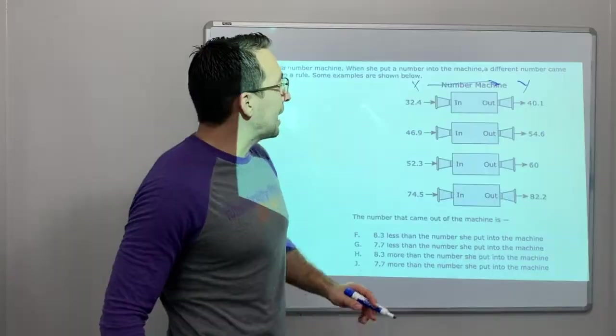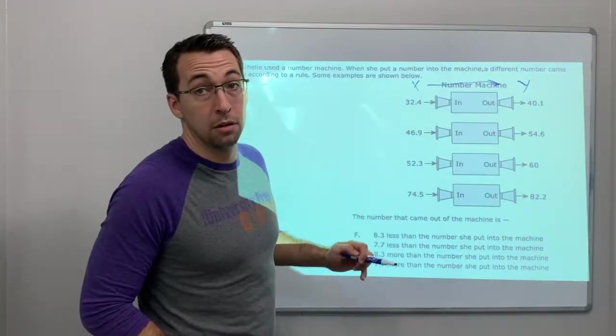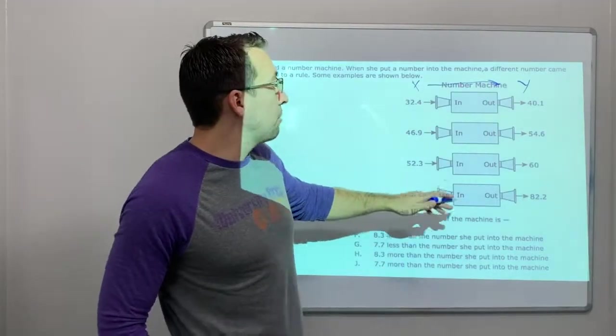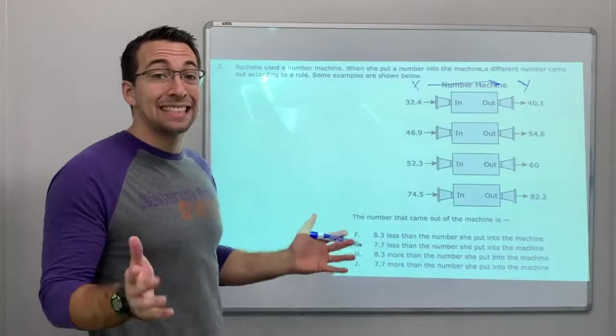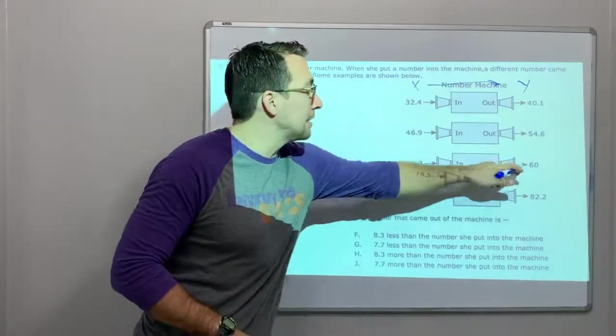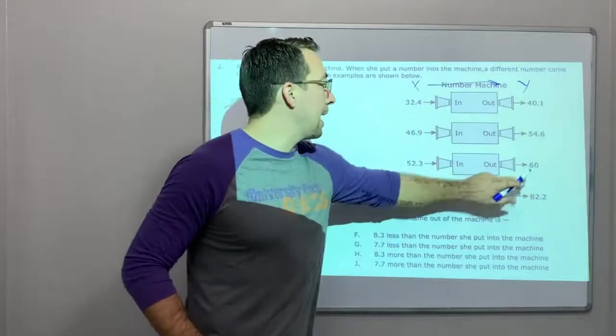Okay. So I'm going to guess it's an additive problem. 52.3 plus whatever, we're going to add. We're not going to multiply to get 60. So let's see what we add.